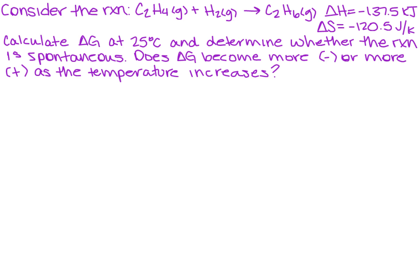We want to consider the following reaction, and they've provided us with delta H and delta S. They want us to calculate delta G at a specific temperature, and then we need to determine whether the reaction is spontaneous. Finally, once we have that, does delta G become more negative or more positive as the temperature increases?